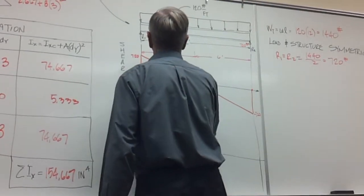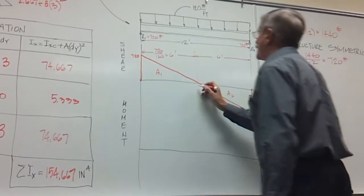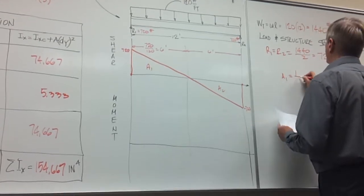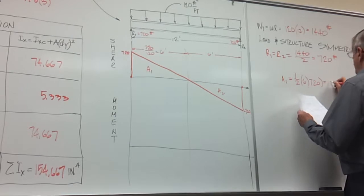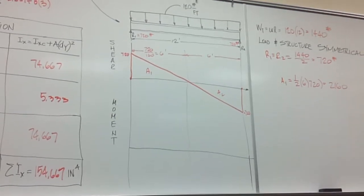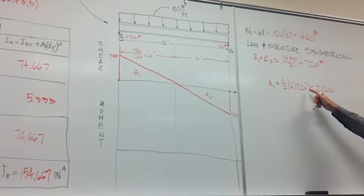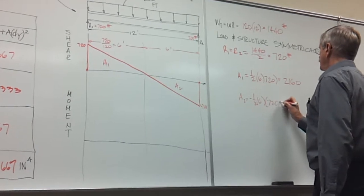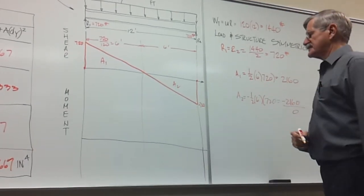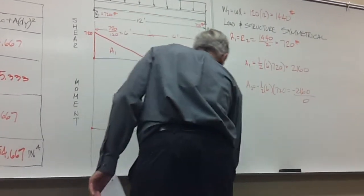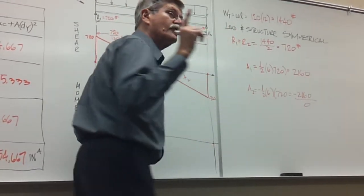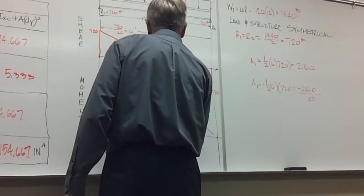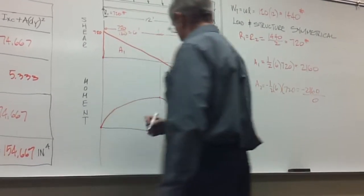From here we are going to get the values of our moment diagram. A1 is then equal to 1 half 6 times 720, and that's equal to 2160, right? A2 is below the axis, the same area, minus this comes to 0. Fancy that. Perfect parabola, imperfectly drawn. Here's my M max.